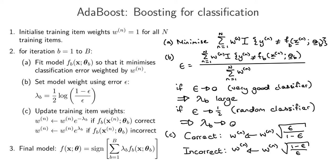Now for a fairly bad, close-to-random classifier, epsilon tends towards a half. For a correctly classified point you get a half divided by (1 − a half), which is 1, and the square root of 1 is 1 — so you basically leave the weights unchanged. For incorrectly classified points you get the same thing: a half over a half equals 1. So for a bad classifier that's close to random, we basically don't touch the training point weights at all. That's everything you need to understand the AdaBoost algorithm.